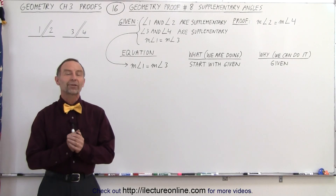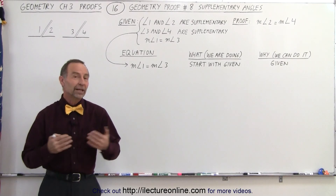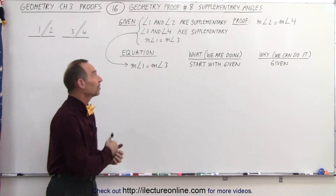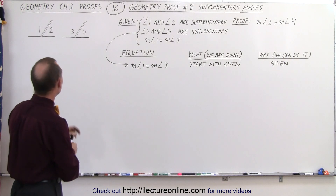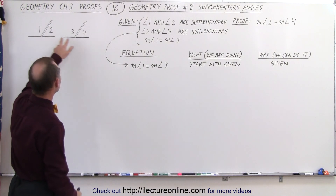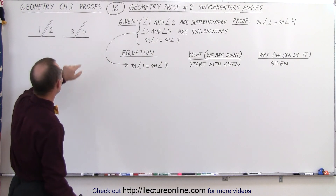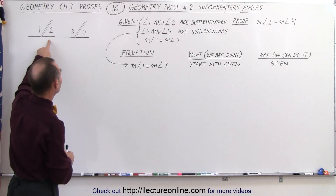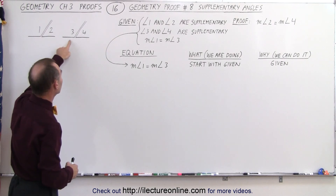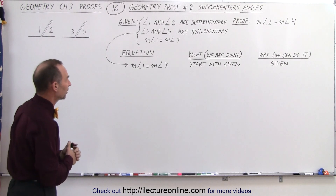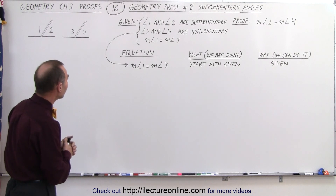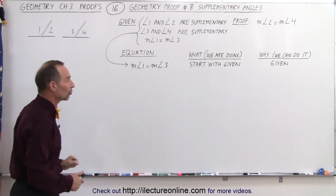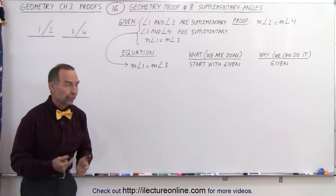Welcome to ElectronLine. Our next proof deals with supplementary angles. We are given two pairs of angles: angle 1 and angle 2 are supplementary angles, angle 3 and angle 4 are supplementary angles, and the measure of angle 1 equals the measure of angle 3.